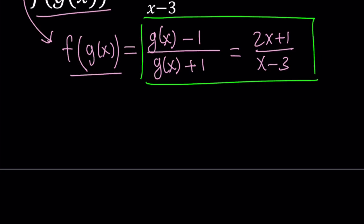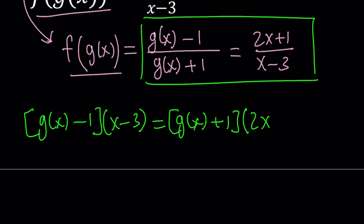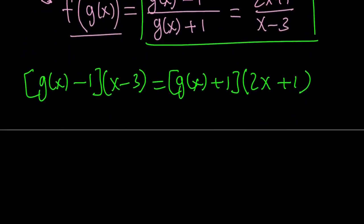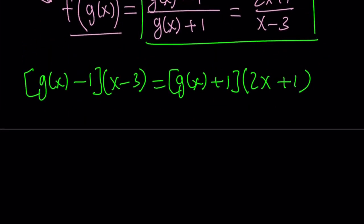Let's go ahead and cross-multiply. I'm going to multiply g(x) minus 1. So let me write it as a product first. This times x minus 3 is going to equal g(x) plus 1. So let's go ahead and distribute here.